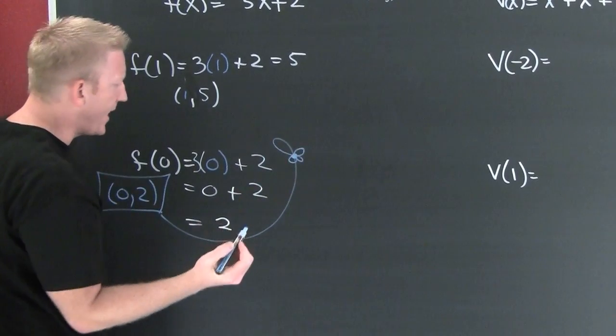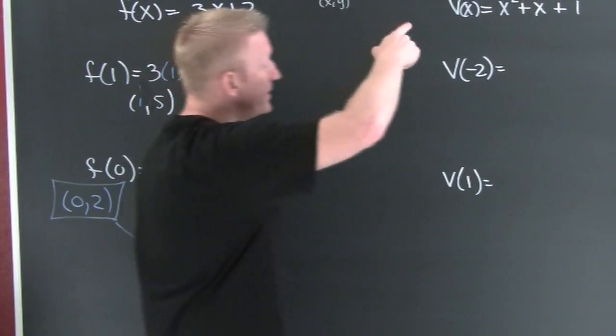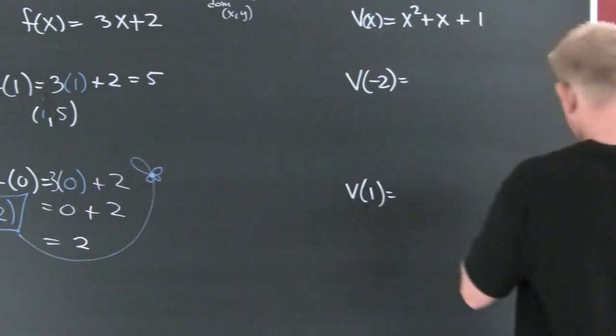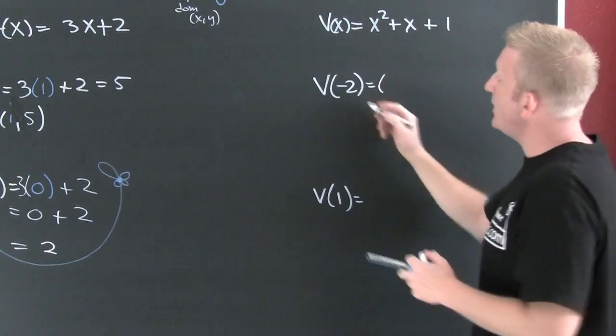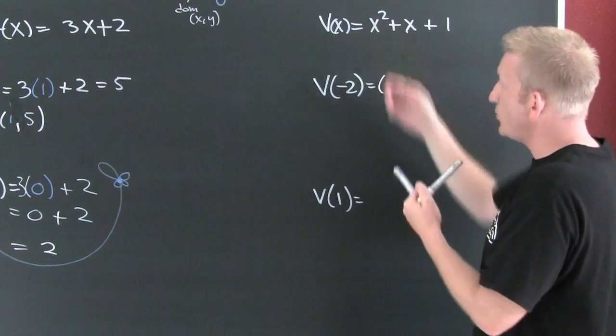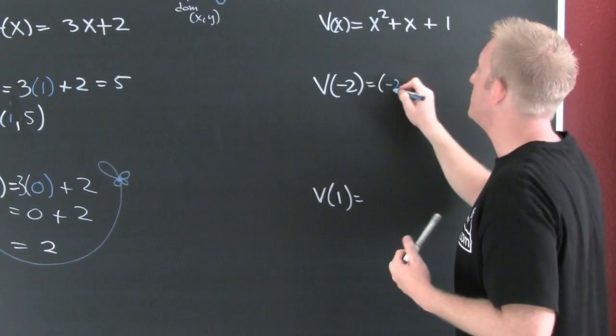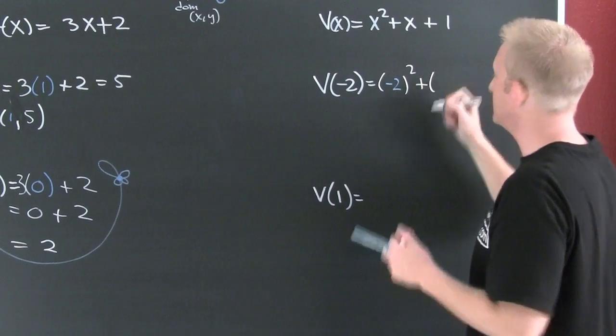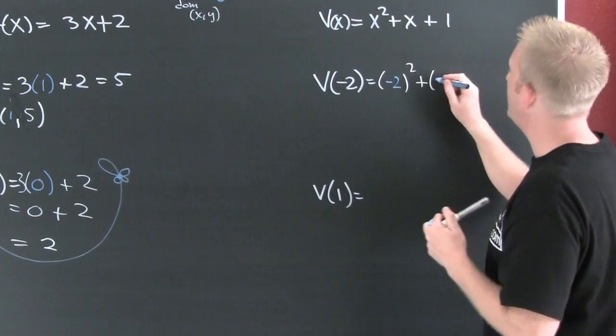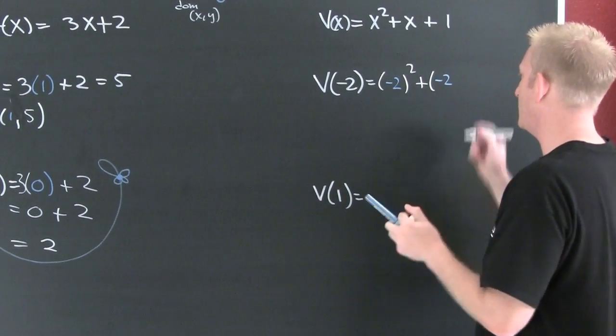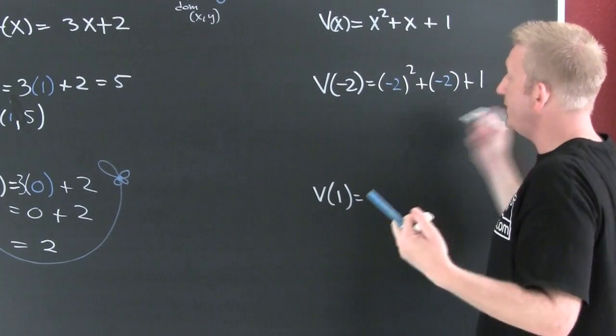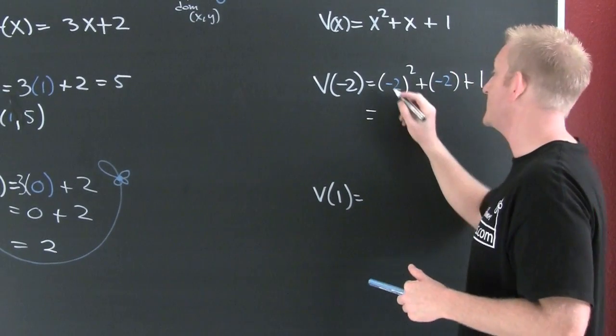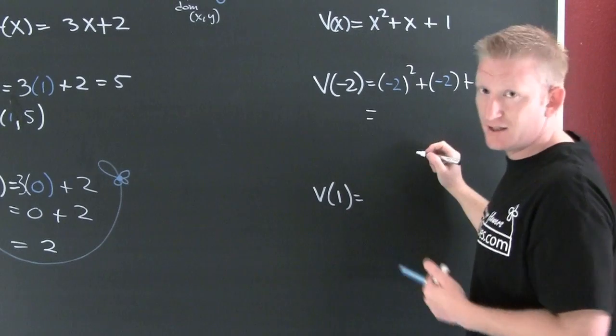On to the next one. Here my x value is gonna be minus 2, so everywhere we see an x I put a minus 2. (-2)^2 + (-2) + 1. I urge you to use parentheses on these type things because minus 2 squared, that's the case where it's 4.